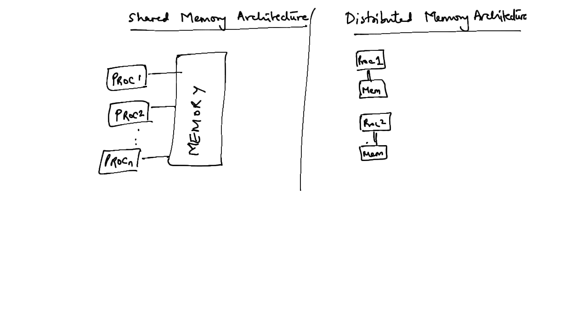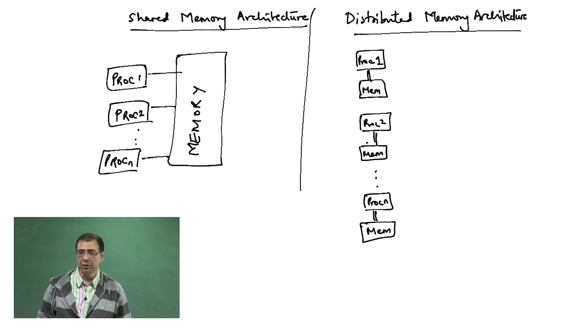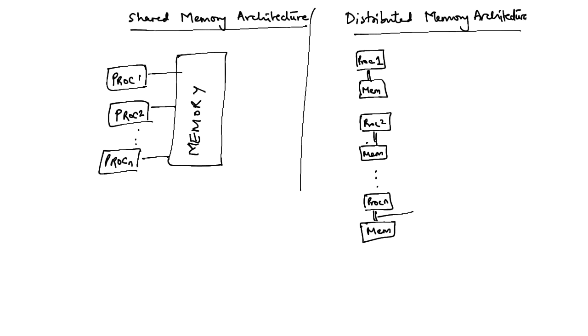There are multiple processes, each one of them having its own memory and now you need to connect these processes up, the processor memory units up. How do you do that? Via some interconnection network.